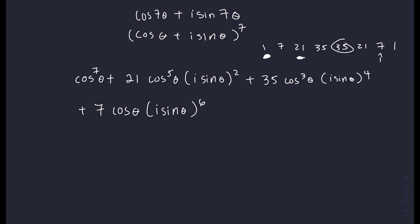We can simplify this further, because i squared is just negative 1. Let's rewrite this entire thing. It will be cosine theta to the seventh, minus 21 cosine 5 theta, sine squared theta. i to the fourth is just 1. And then finally, 7 cosine theta, and i to the sixth is going to be negative 1. So we actually want to change this sign to minus, and then sine to the sixth theta.